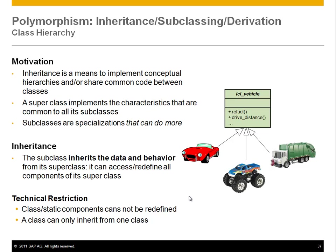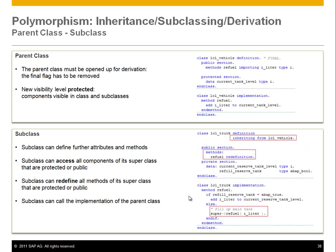It's important that class and static components cannot be redefined — static things are kind of outside of the inheritance game. Also, a class can only inherit from one class. If you're familiar with languages like C++ that allow multiple inheritance, ABAP Objects does not do that.